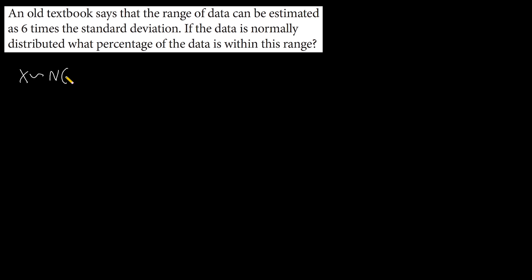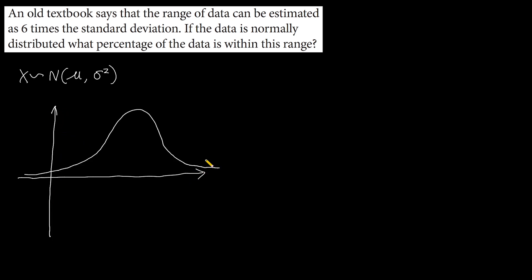So the variable follows the normal distribution. Let's see the graph of the probability density function — it should look like this. Here is the mean, and here would be the mean minus three times the standard deviation.